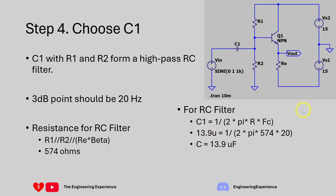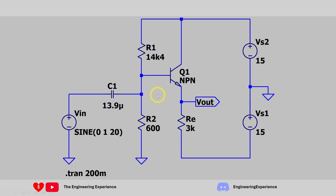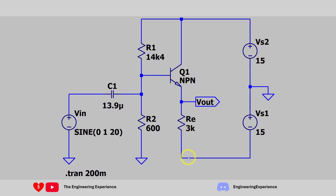We have now calculated everything needed: RE, R1, R2, and C1. The final circuit uses a plus and minus 15 volt power supply, with R2 = 600 Ω, R1 = 14.4 kΩ, RE = 3 kΩ, and C1 = 13.9 µF. The high-pass RC filter attenuates frequencies below 20 Hz. R1 and R2 form a potential divider setting the base bias to 0.6 V, and RE sets the quiescent current to 5 milliamps.